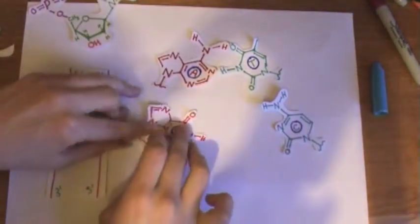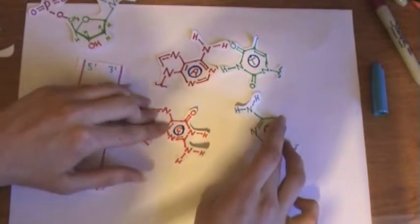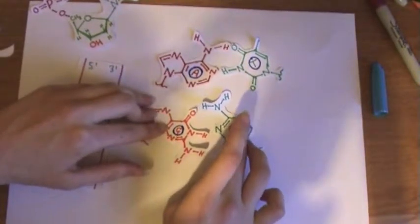Now, G similarly binds with C and it forms three hydrogen bonds. You can see that they really nicely fit together, made for each other.